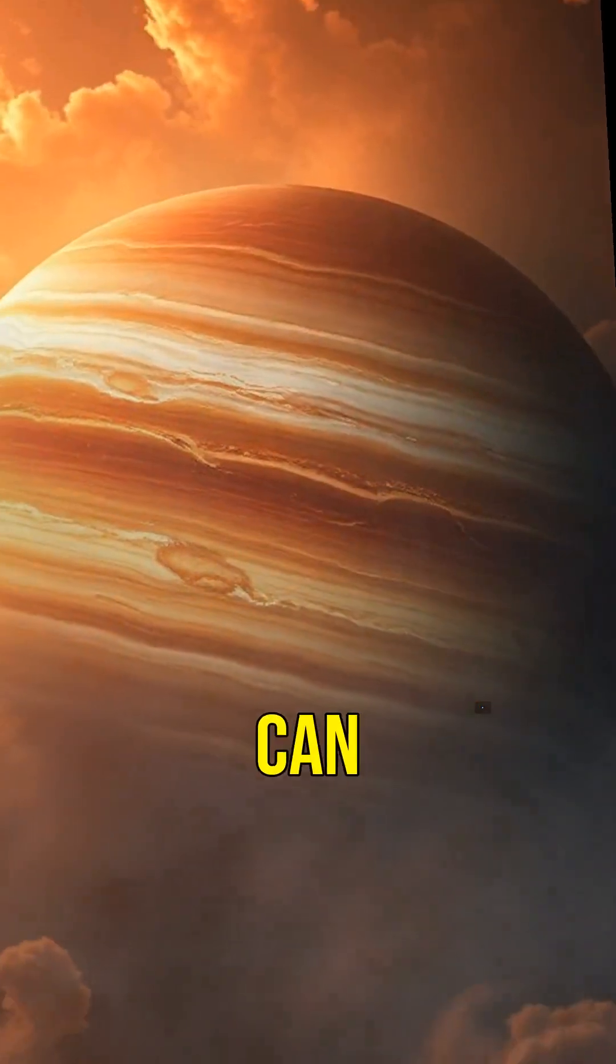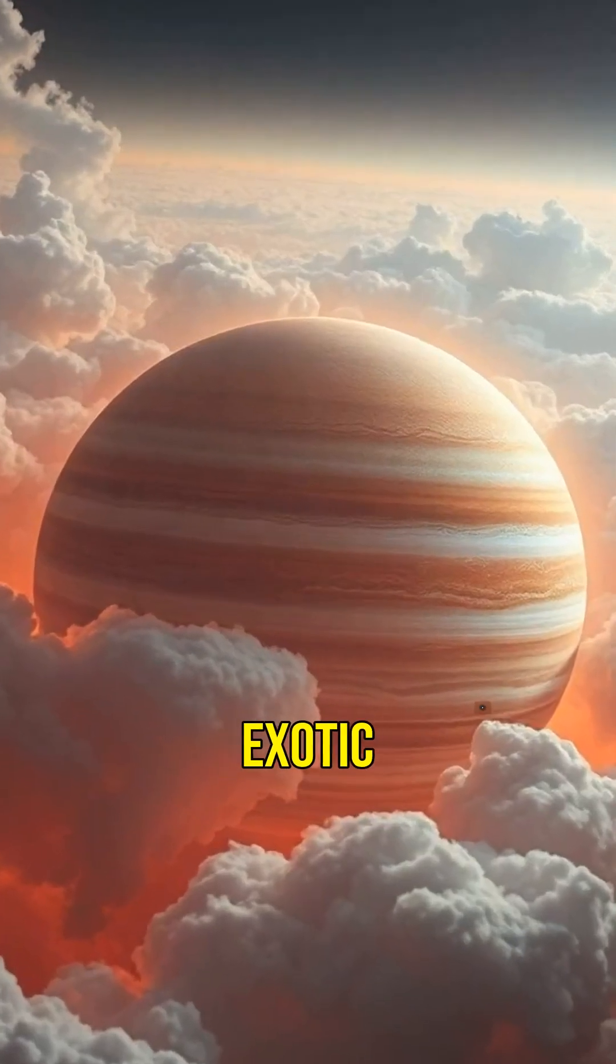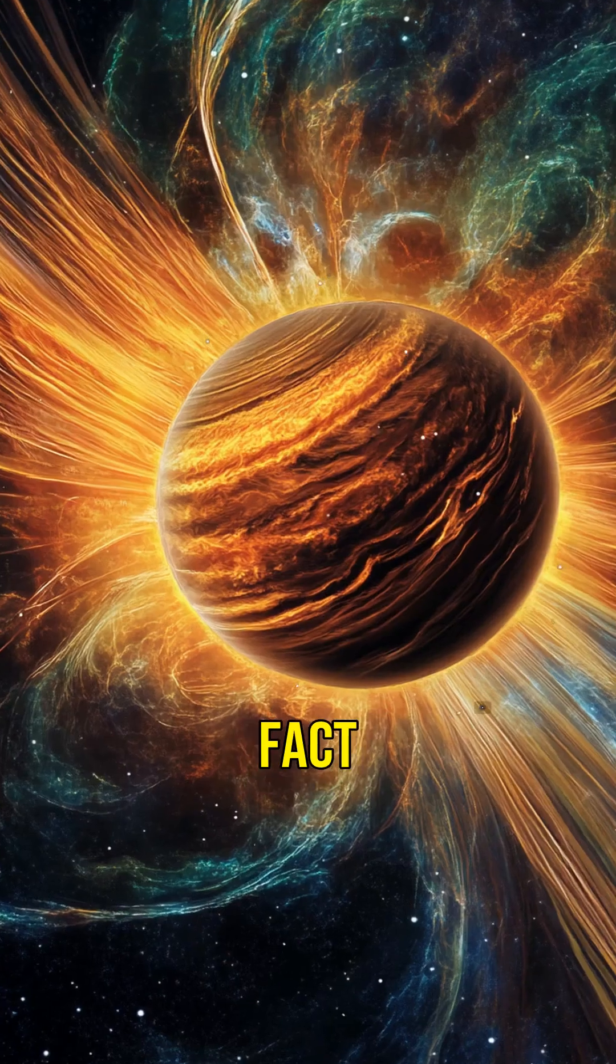Fact 4: Their atmospheres can be incredibly thick and filled with exotic clouds made of metals and other compounds. Fact 5: Despite their size and heat, some hot Jupiters have surprisingly strong magnetic fields.